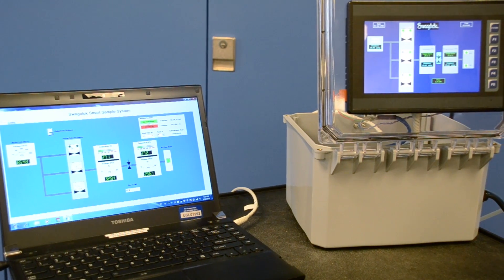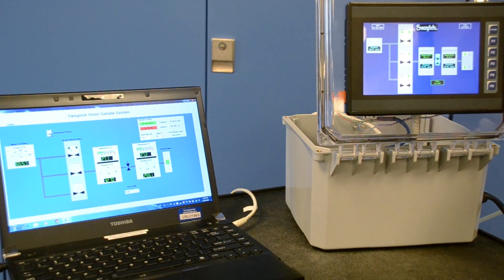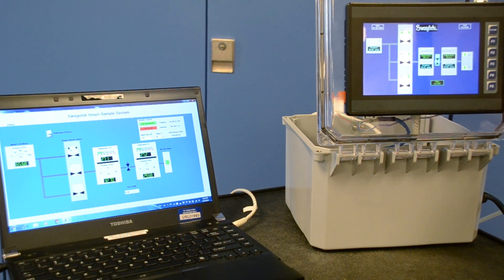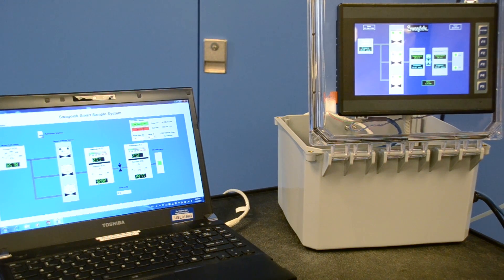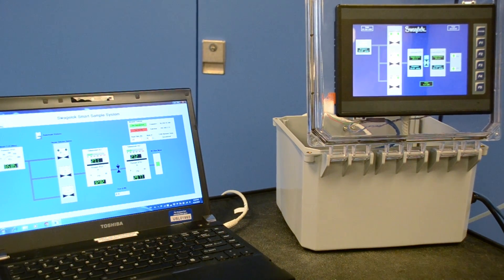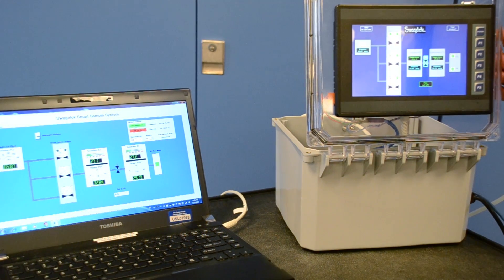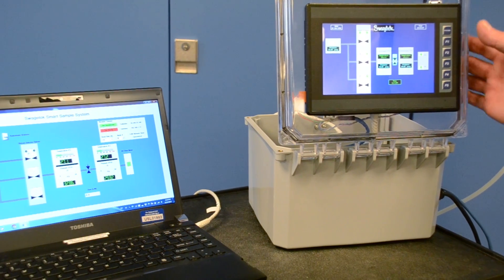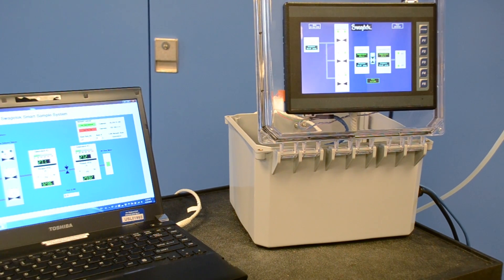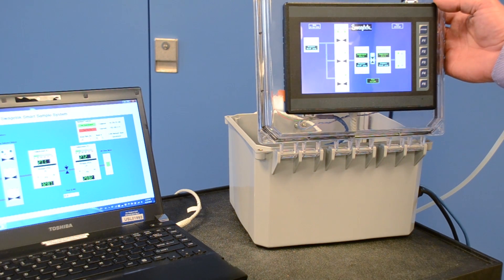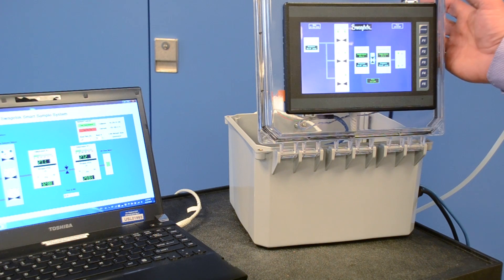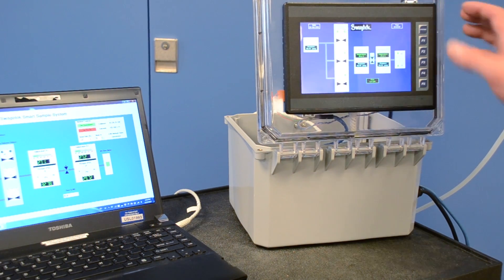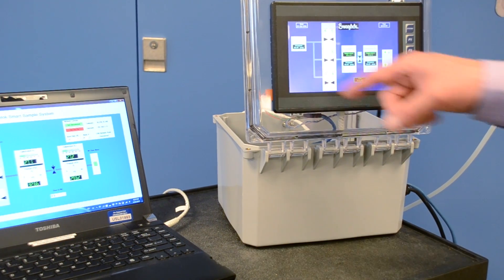The second role that the operator control station fills is to provide a local indication of the conditions of your sample systems. Now, I say sample systems because one operator control station can manage up to 25 Swagelok automated fluid systems. So with one of these in your analyzer shelter, you can have 25 sample systems at that location, all of them being monitored, and even controlled, from the operator control station.